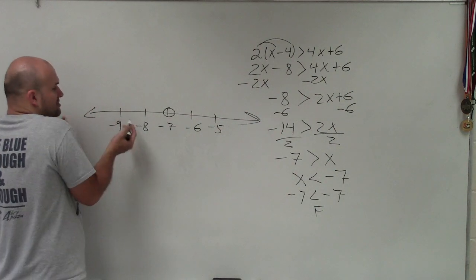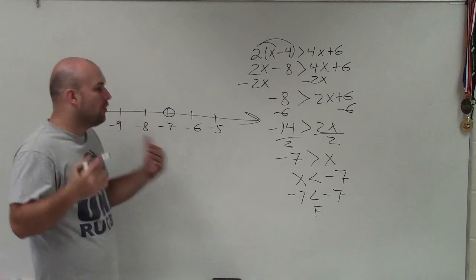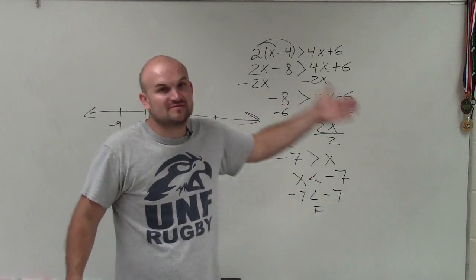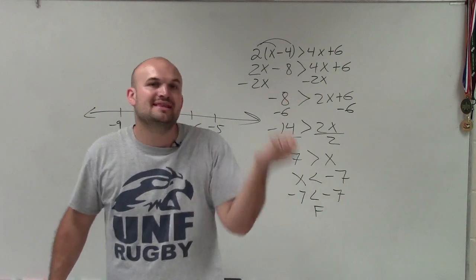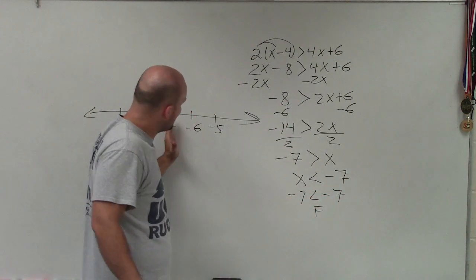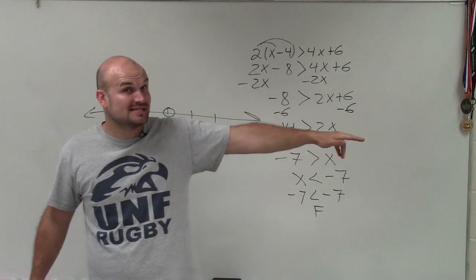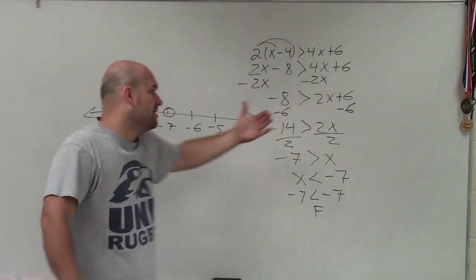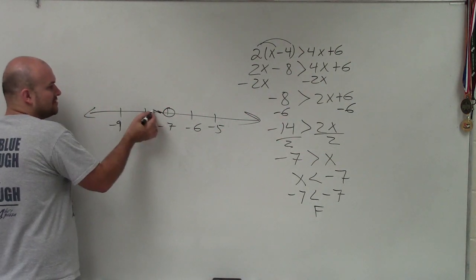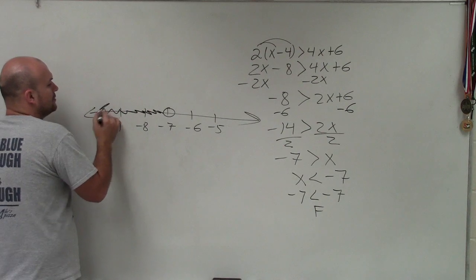I'm going to choose points to the right and left and test them. Or if you just read this out loud, x is less than negative 7. All the values have to be less than negative 7. Is that going to be values to the right? Are those less? No, those are going to the positive. But to the left, these values are less. Therefore, it goes to the left.